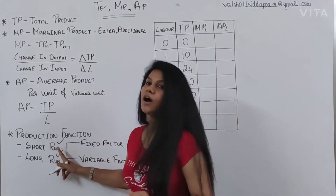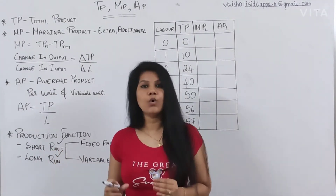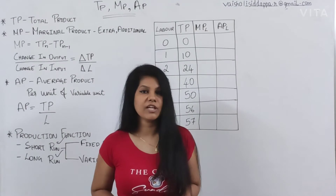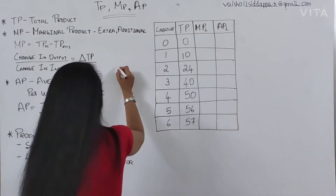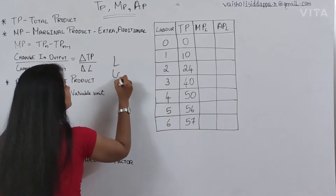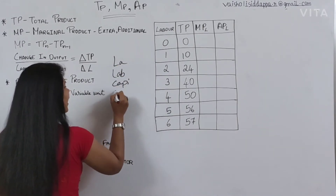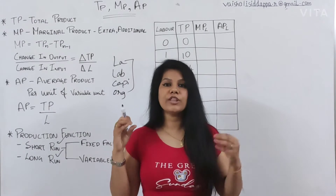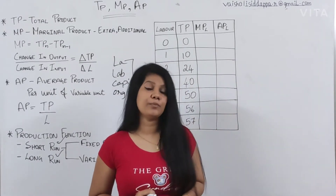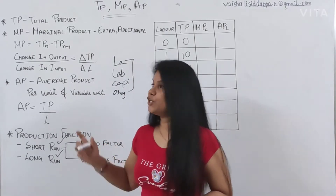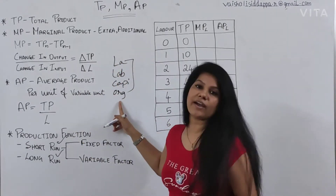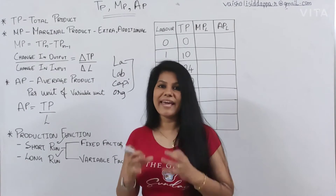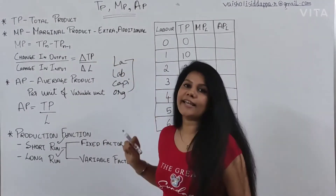In the short run, how are inputs going to work? In the long run, how are inputs going to work? We have four factors of production: land, labour, capital, and organisation. All four are factors of production. Without any one of them, production is really impossible. You cannot say you will leave land and use only three factors of production — it is not going to happen. These basic inputs are called factors of production.